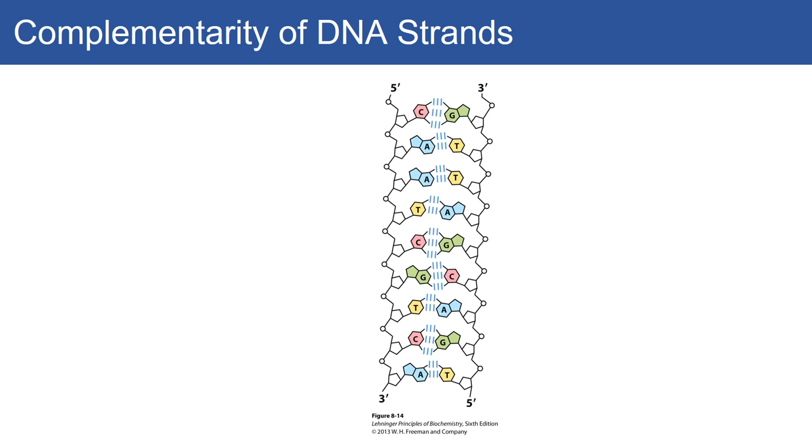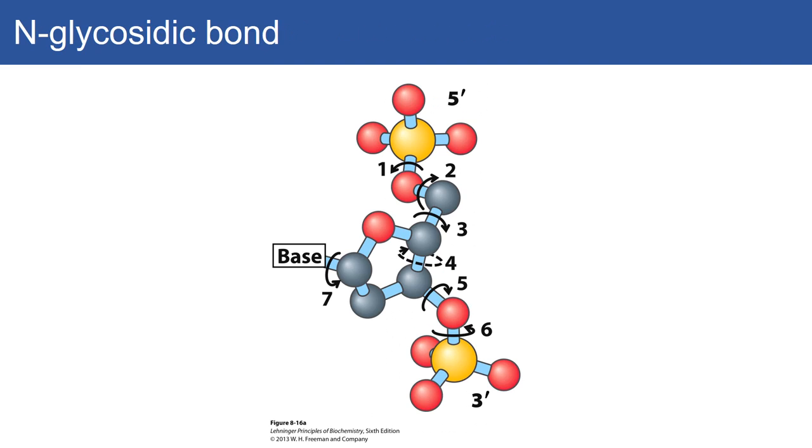The two chains are complementary and run anti-parallel to each other, meaning one goes from five prime to three prime and the other from three prime to five prime.